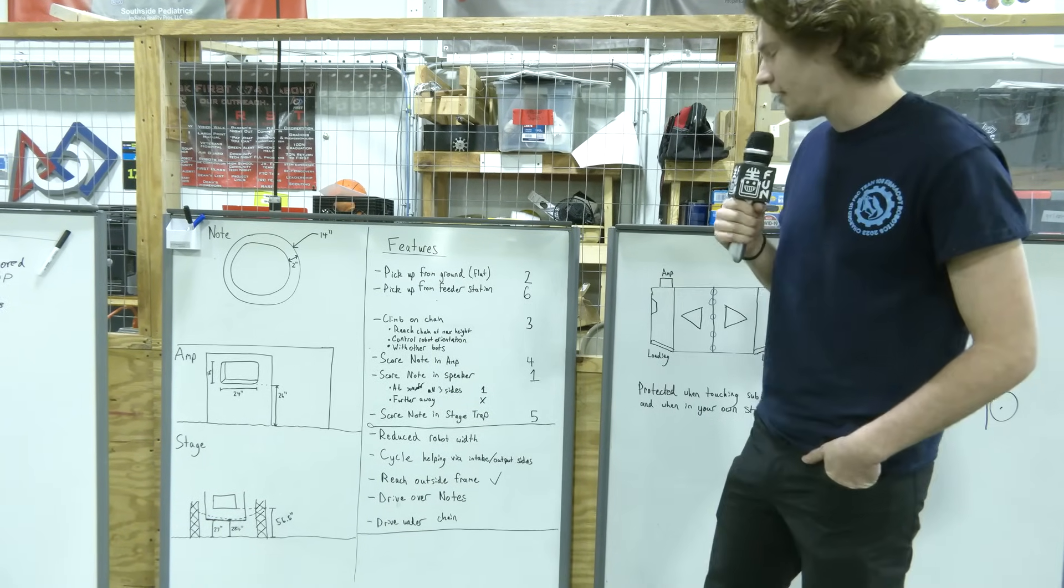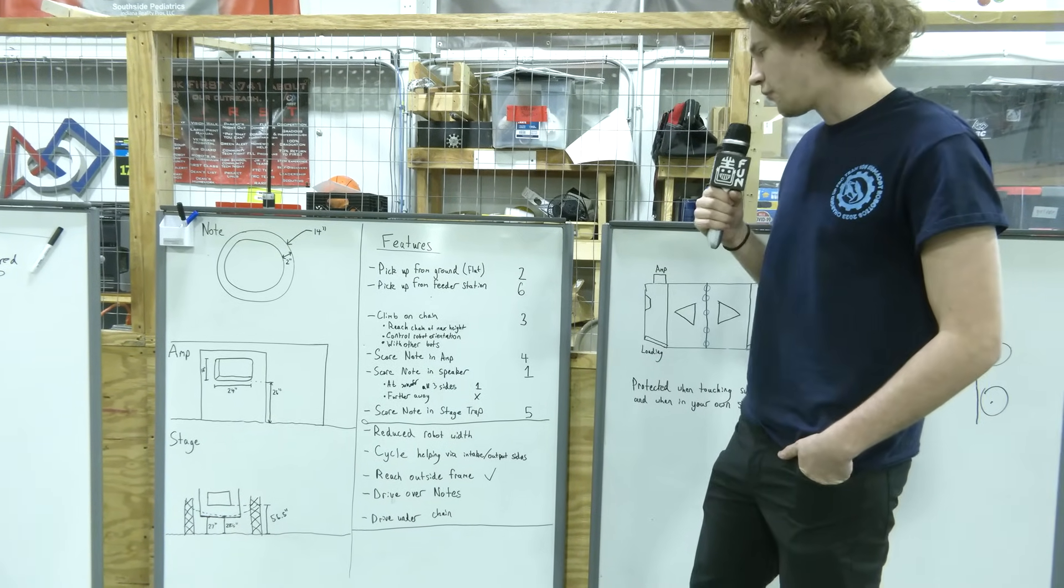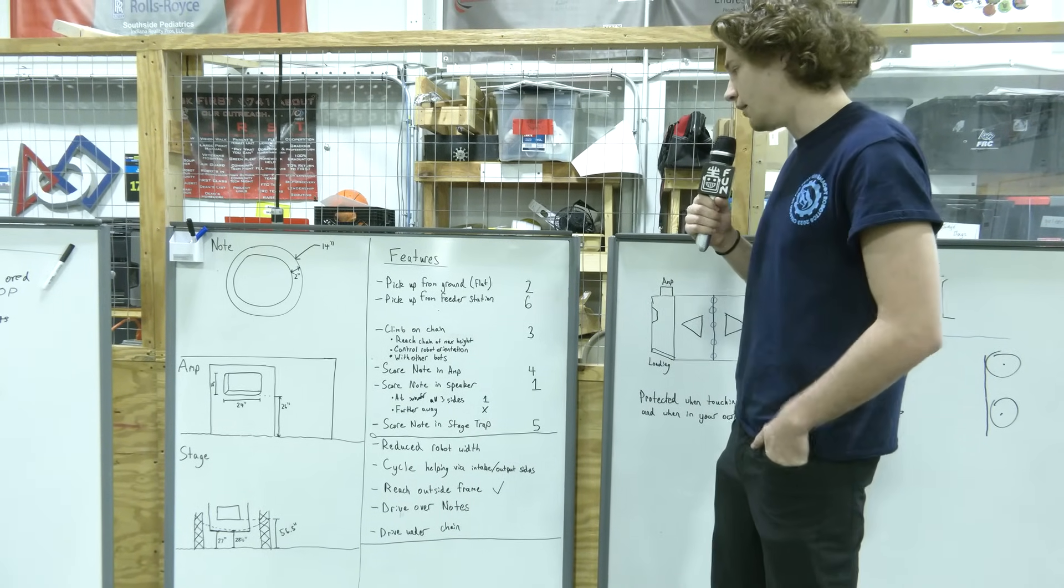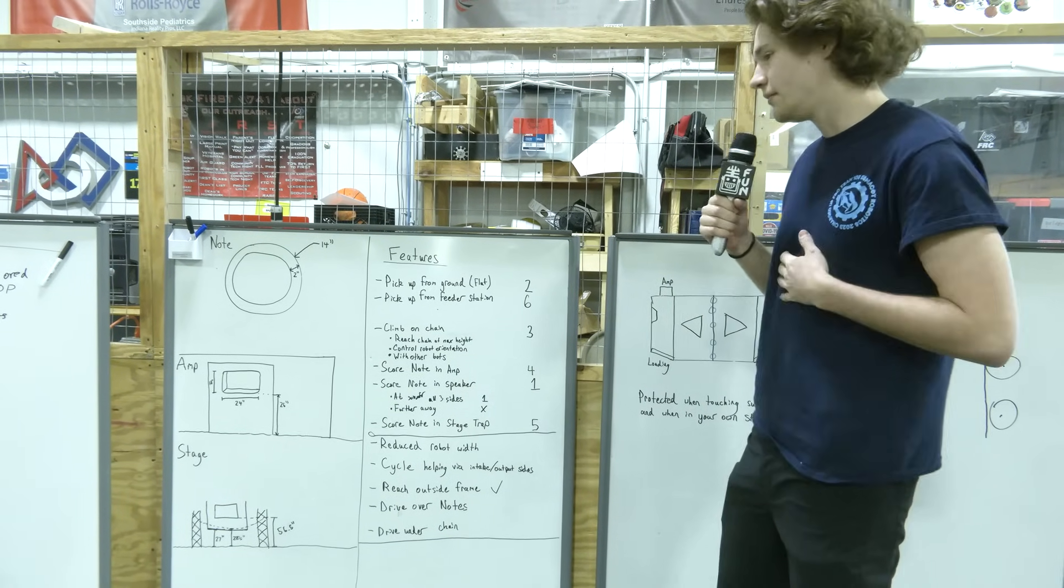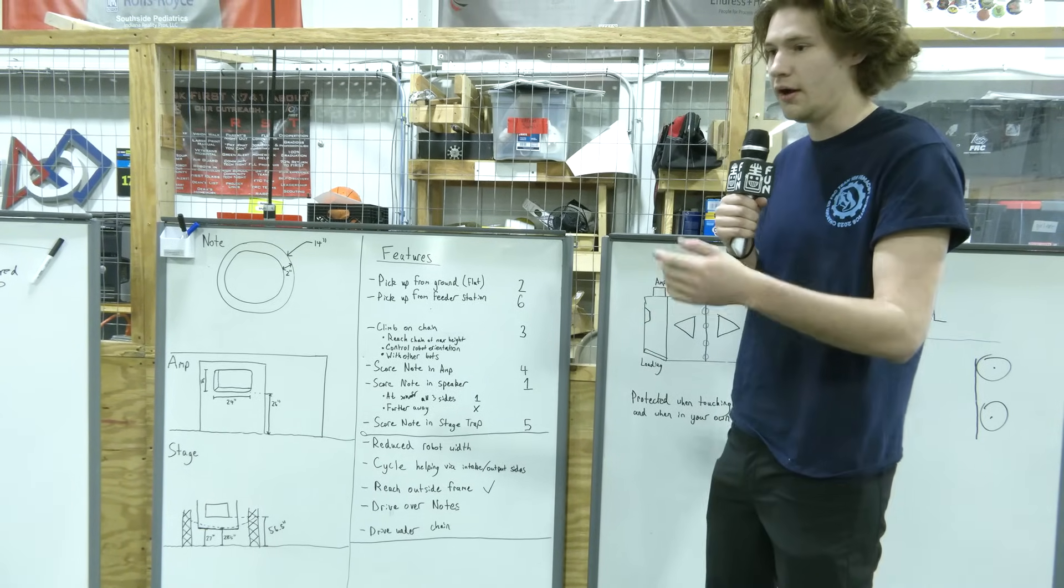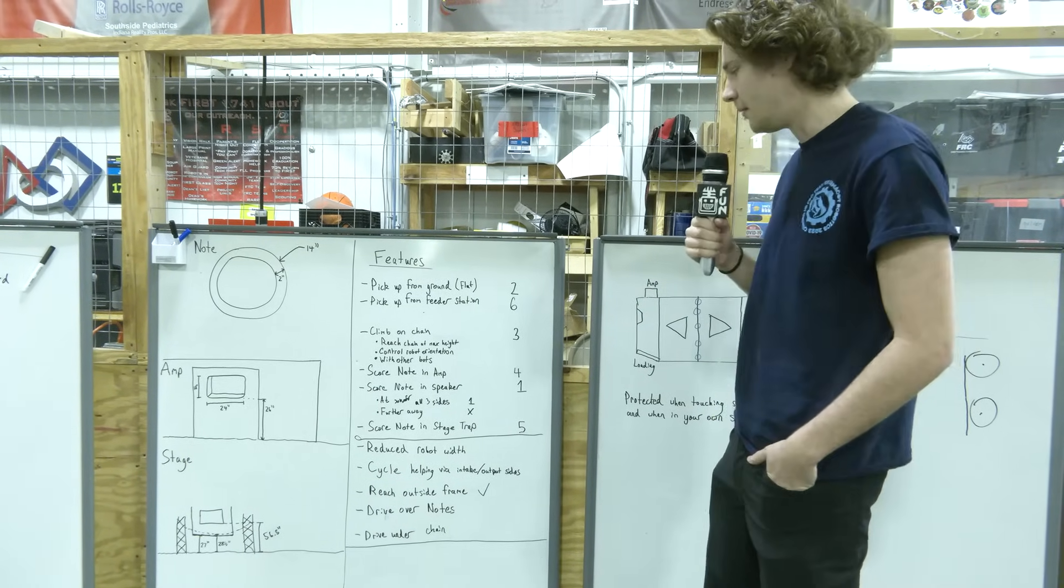After that is picking up from the feeder station. This is a bit of a lower priority for us because we assume that we can basically get from any position from ground pickup, which will allow us, the human player station can throw out game pieces onto the floor and we can pick them up from there.